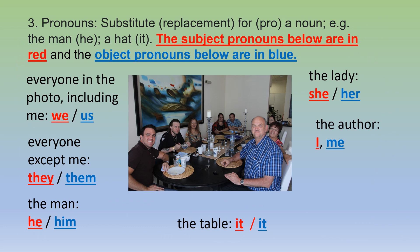Three: pronouns are a substitute or replacement for a noun. The word pronoun means 'for the noun', so I can put the pronoun in the place of a noun. For example: the man — he; a hat — it. The subject pronouns are in red and the object pronouns are in blue. I can have pronouns in the subject and I can have pronouns as objects. If I want to say 'they sat with us', that is the pronoun in the object place.